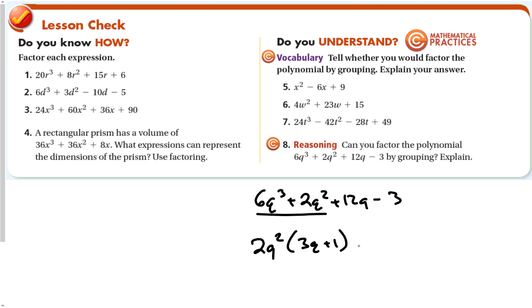Common factor there is, let's factor out a positive 3, and that leaves me with 4 Q minus 1. Unfortunately, these two are not the same. That means this technique will not work with this expression.